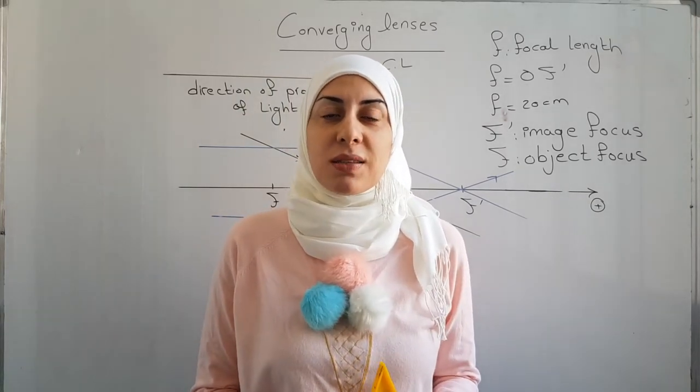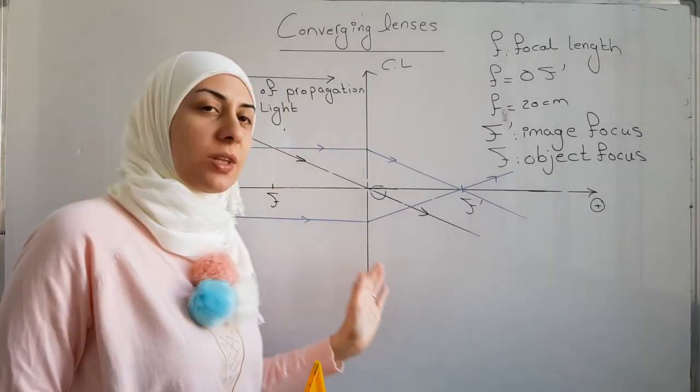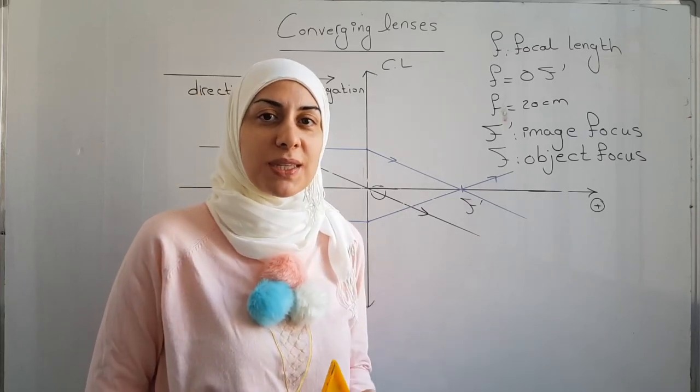The third special ray is the one that passes through the object focus and it continues parallel to the optical axis.